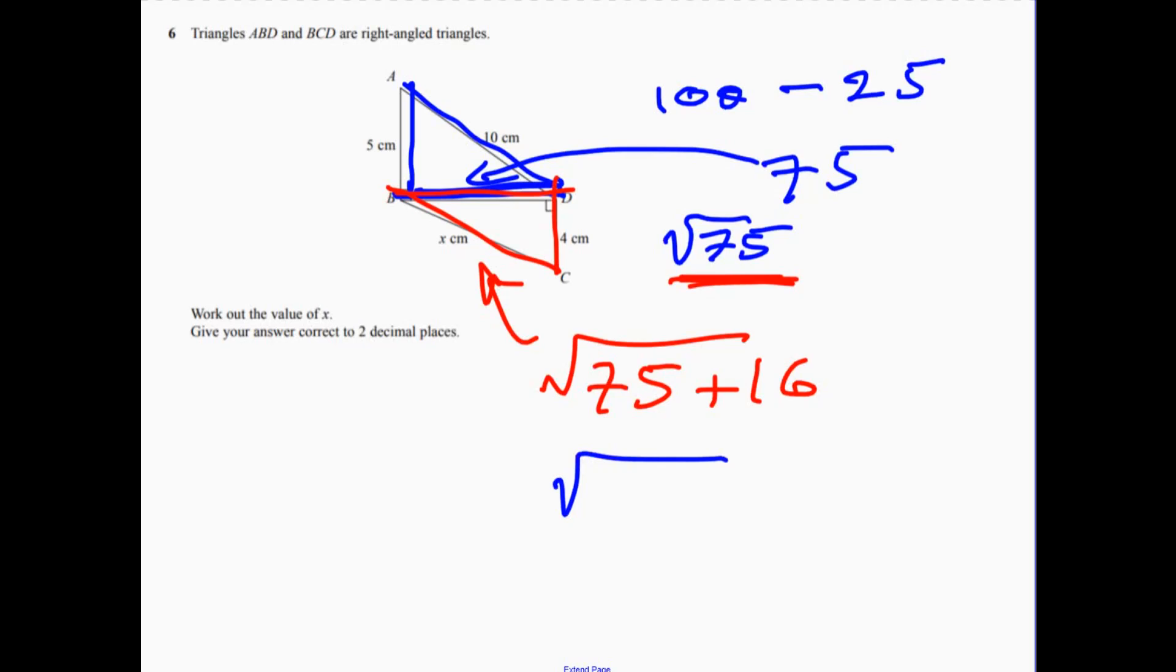that's 91. So if we do the square root of 91, so therefore x equals 9.54 centimeters.